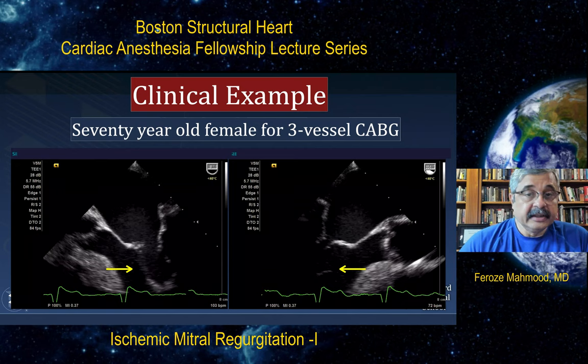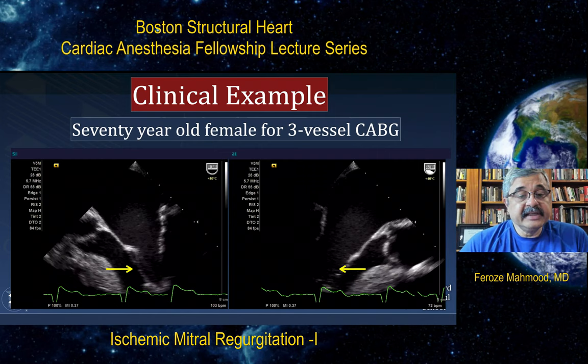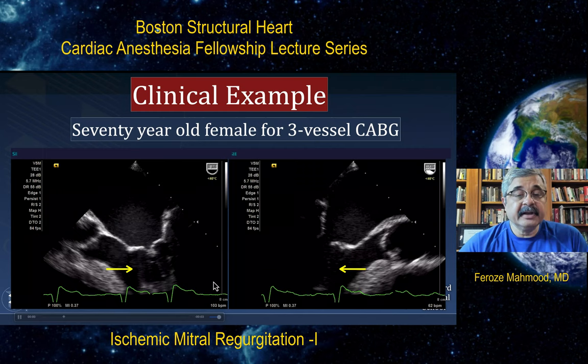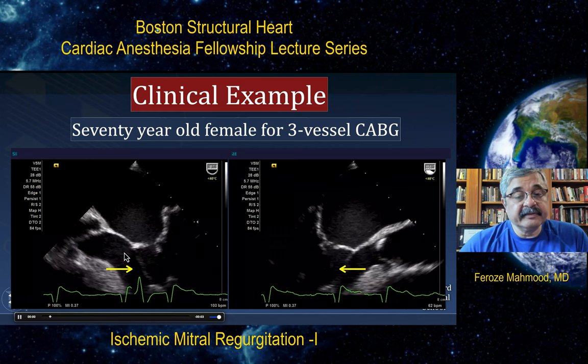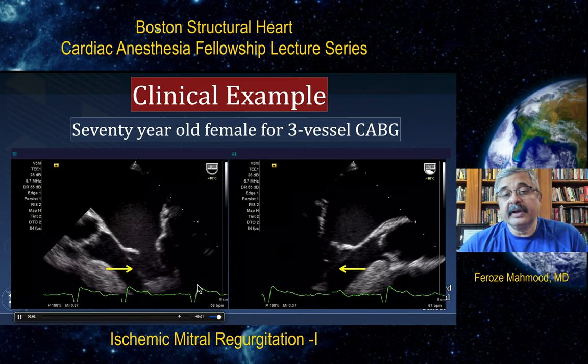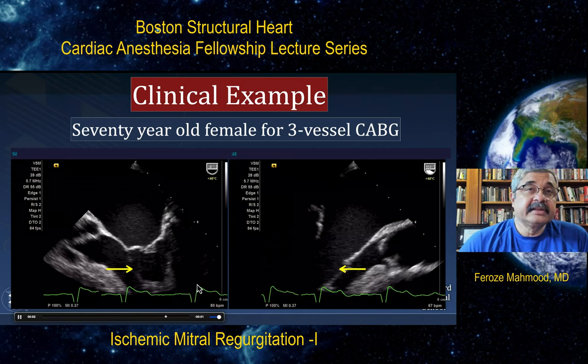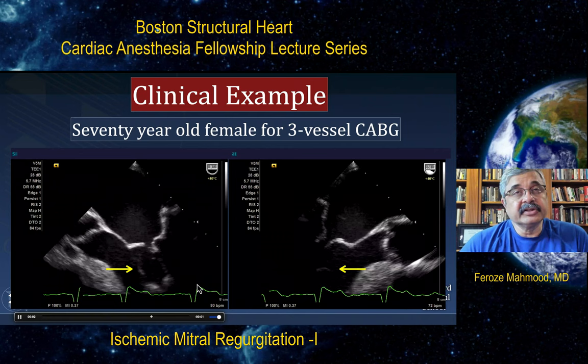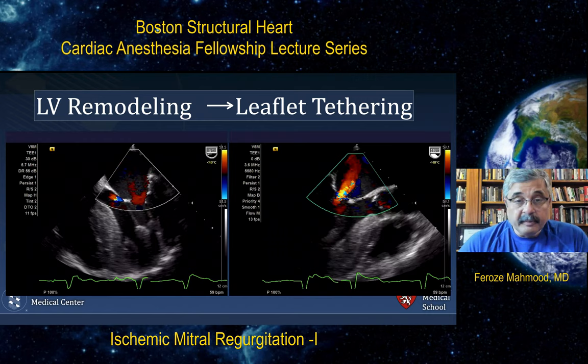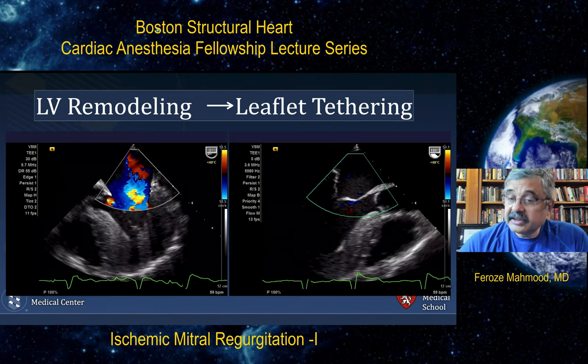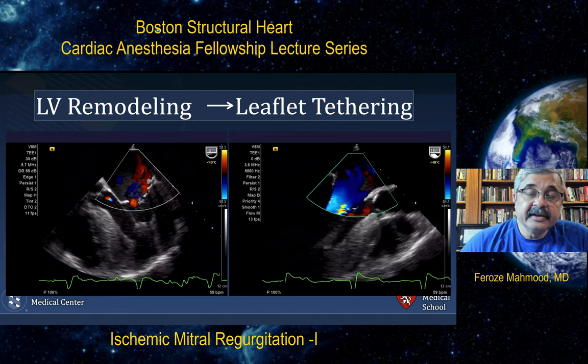Another clinical example is a 70-year-old female for three-vessel CABG. You can see these tethered chordae tendineae pulling the leaflets more towards apical displacement, and particularly a chord attaching to the belly of the anterior leaflet, leading to the classical seagull appearance of the anterior leaflet — also known as the seagull sign — which is quite indicative of significant adverse remodeling and tethering. This is left ventricular remodeling leading to an imbalance between closing and tethering forces, causing significant tethering of both anterior and posterior leaflets and central mitral regurgitation.